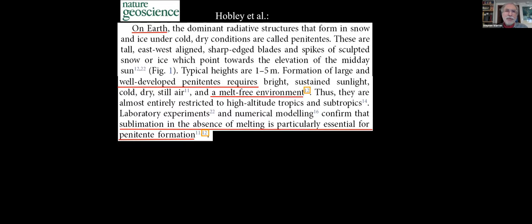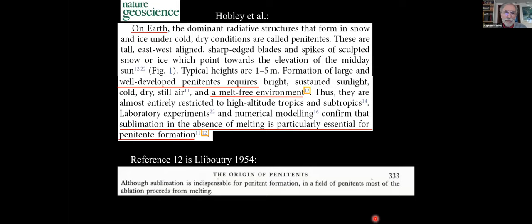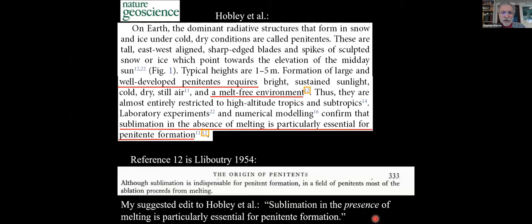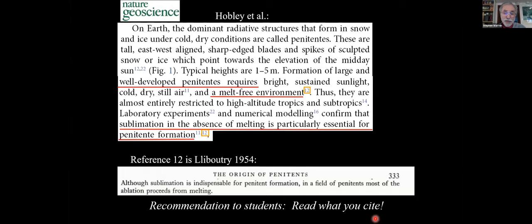Here's what they were thinking. Their first paragraph states: 'On Earth, well-developed penitentes requires a melt-free environment' — reference 12 — and 'sublimation in the absence of melting is particularly essential for penitente formation' — again reference 12. But reference 12 is Lliboutry's paper, which says: 'Although sublimation is indispensable for penitent formation, in a field of penitents, most of the ablation proceeds from melting.' I suggest Hobley et al. should have changed just one word — instead of 'sublimation in the absence of melting,' it should read 'sublimation in the presence of melting is particularly essential for penitente formation.' My recommendation to students: read what you cite.